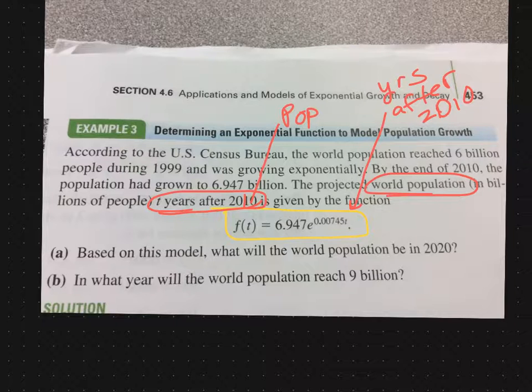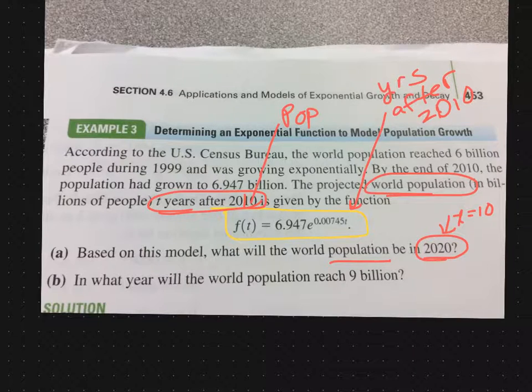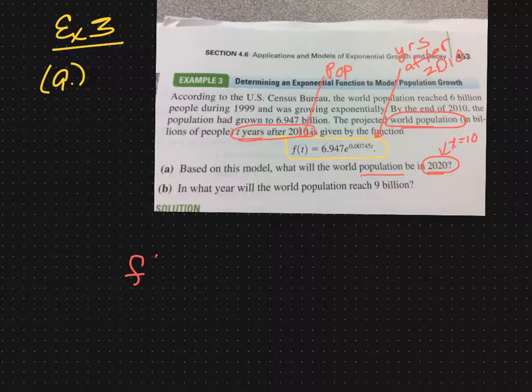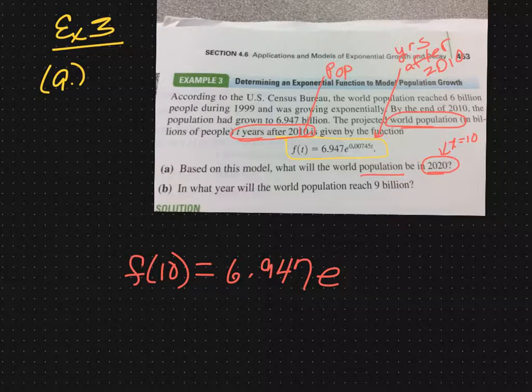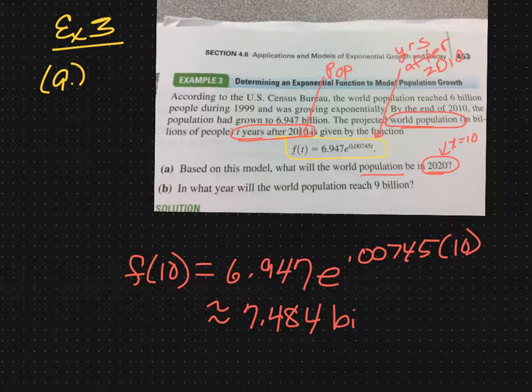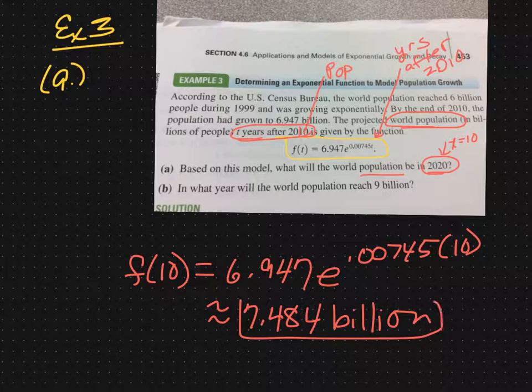Part A says, what would the world population be in 2020? It's asking for the population, and it's giving me a time. In 2020, t would be 10. For that part of the problem, all we're going to do is put 10 in for t. We'd be looking at f(10), which would equal 6.947e to the .00745 times 10. According to your textbook, that turns out to be approximately 7.484. In 2020, using this model, we would expect the population of the world to be nearly 7.5 billion people.